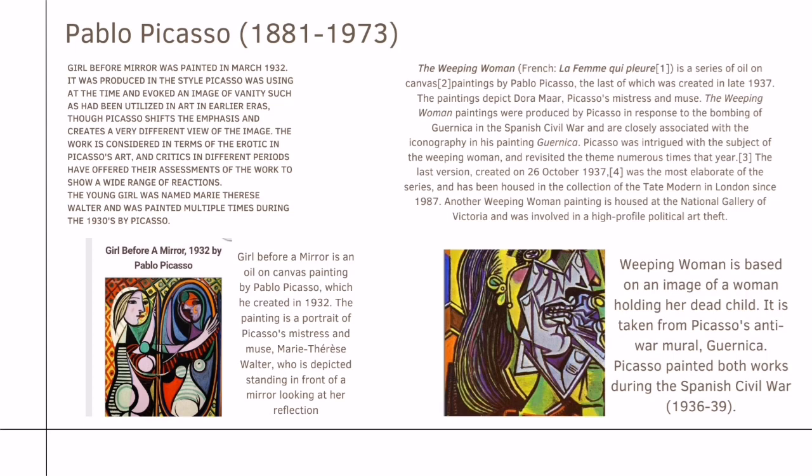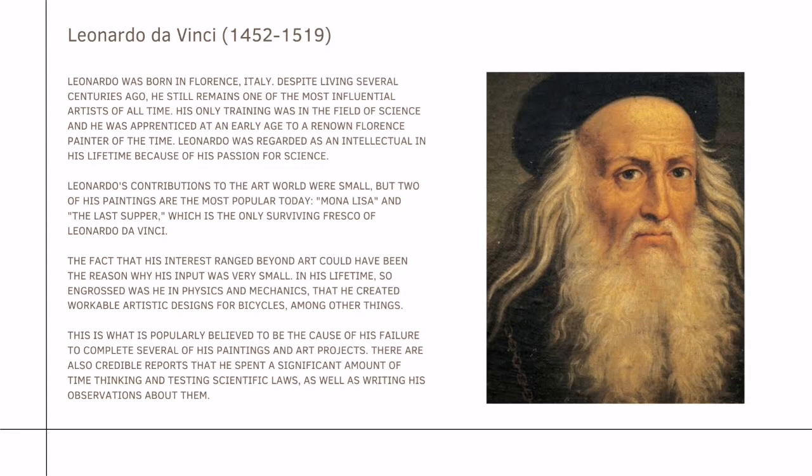The fourth artist is Leonardo da Vinci. Leonardo was born in Florence, Italy, and despite living several centuries ago, he still remains one of the most influential artists of all time. His only training was in the field of science and he was apprenticed at an early age to a renowned Florentine painter of the time. Leonardo was regarded as an intellectual in his lifetime because of his passion for science. His contributions to the art world were small, but two of his paintings are the most popular today: the Mona Lisa and the Last Supper, which is the only surviving fresco of Leonardo da Vinci.